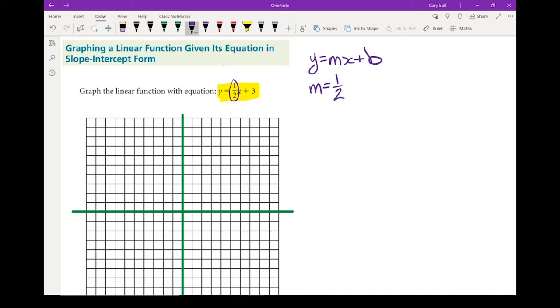m equals 1 half. And this piece over here, sign included, must be our b. We've got our slope, we've got our starting point. So if I'm going to draw this line, I will start with my b, because that's my starting point.